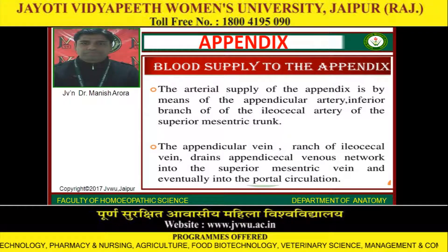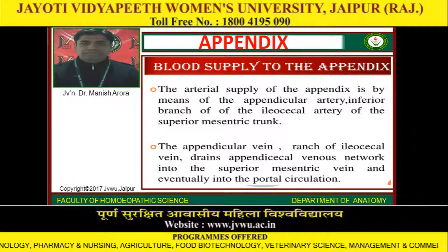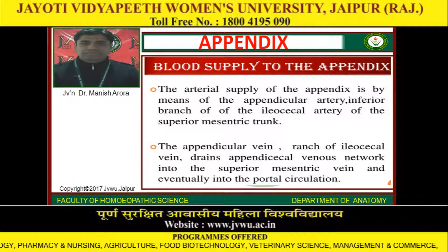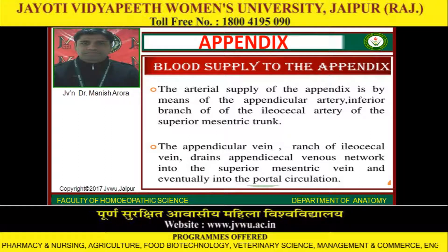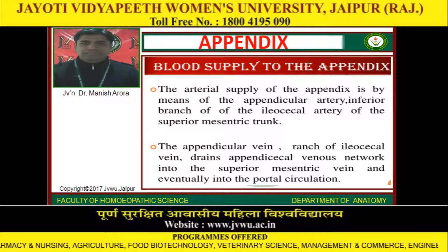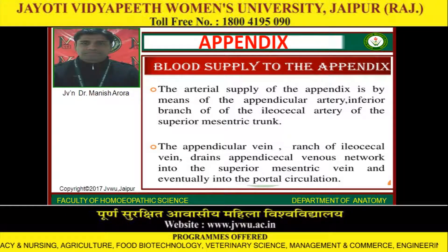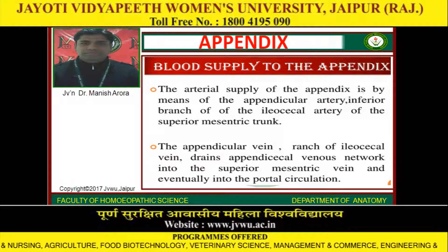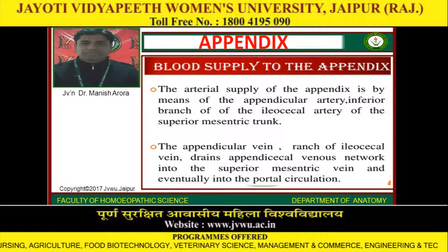Blood supply of the appendix: The arterial supply is by means of the appendicular artery, an inferior branch of the ileocolic artery of the superior mesenteric trunk. The appendicular vein is a branch of the ileocolic vein, which drains the appendicular venous network into the superior mesenteric vein and eventually into the portal circulation.